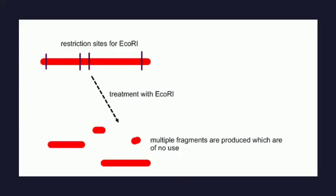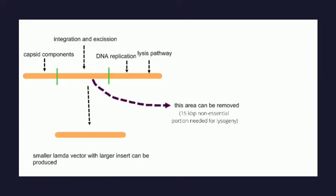So some powerful cloning vehicles were derived from the lambda genome, wherein the 15 kbp non-essential portion needed for lysogeny of the phage genome was eliminated, enabling the lambda vector to house an insert of at least 18 kbp — an impressive insert size considering the size of the lambda genome.